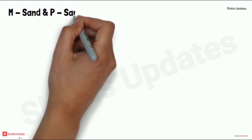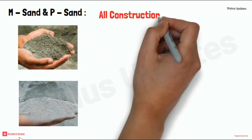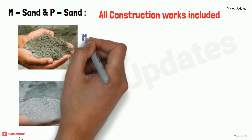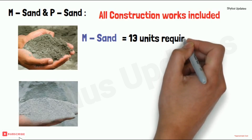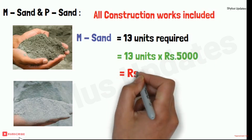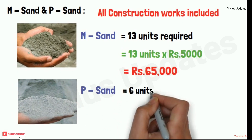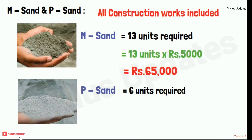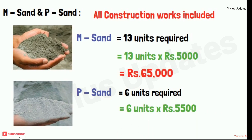M Sand and P Sand are used in all construction works. For a 750 square feet house, 13 units of M Sand are required. The current market rate of M Sand is rupees 5,000 per unit. When you multiply 13 units into rupees 5,000, you get rupees 65,000. For P Sand, 6 units are required. The current market rate of P Sand is rupees 5,500 per unit. When you multiply 6 units into rupees 5,500, you get rupees 33,000.